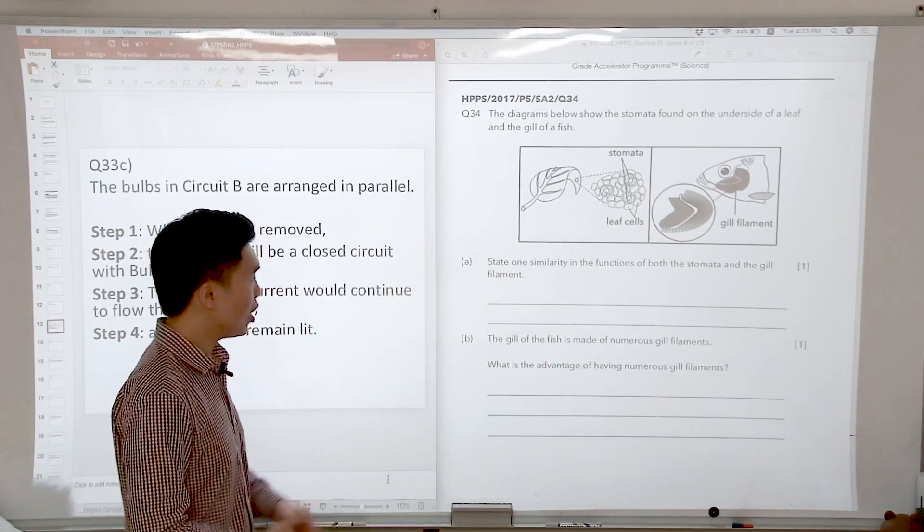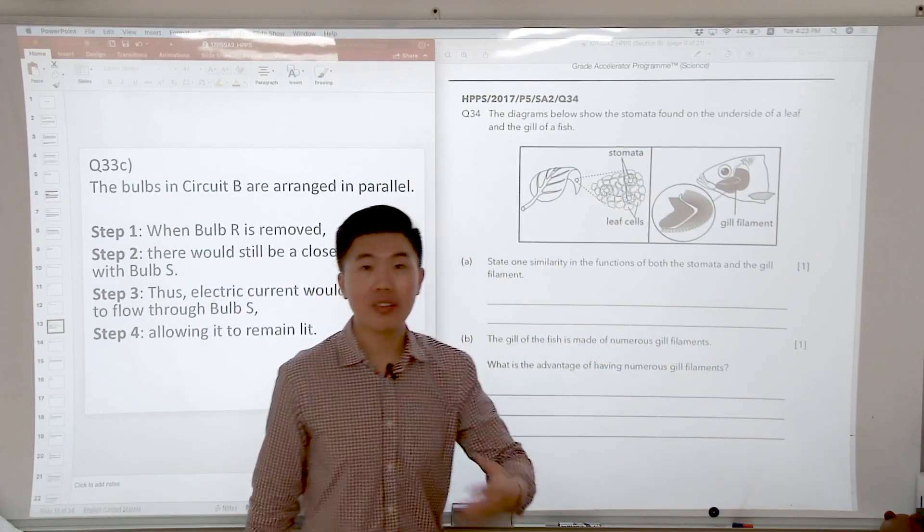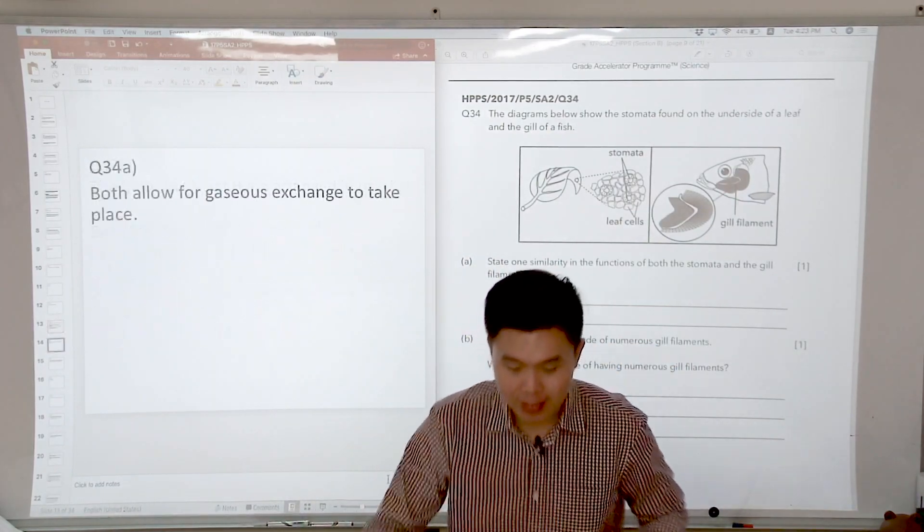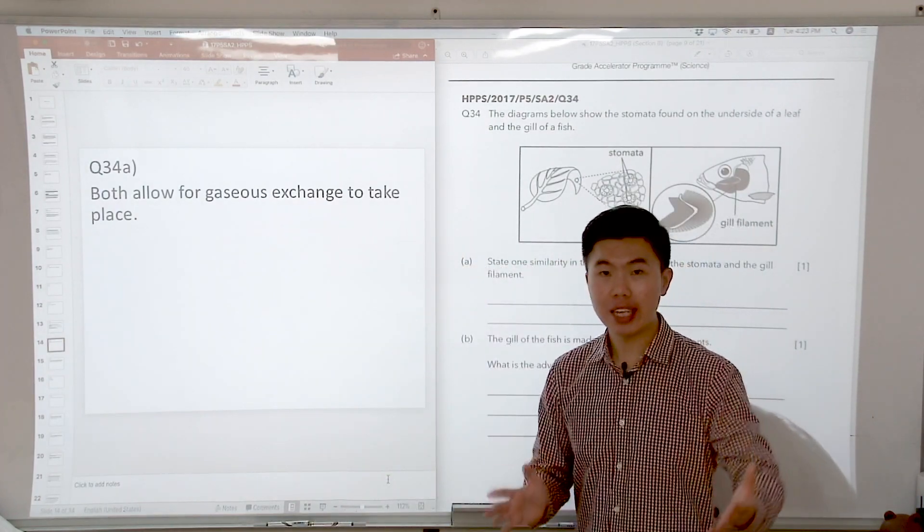So let's quickly answer part A. State one similarity in the functions of both the stomata and the gill filament. I believe I have mentioned that just now. The answer is that both allow for gaseous exchange to take place.